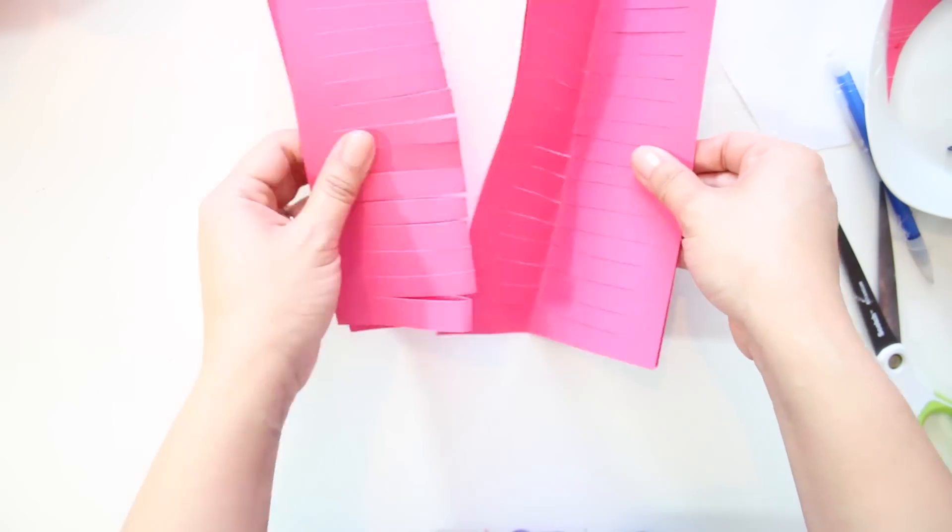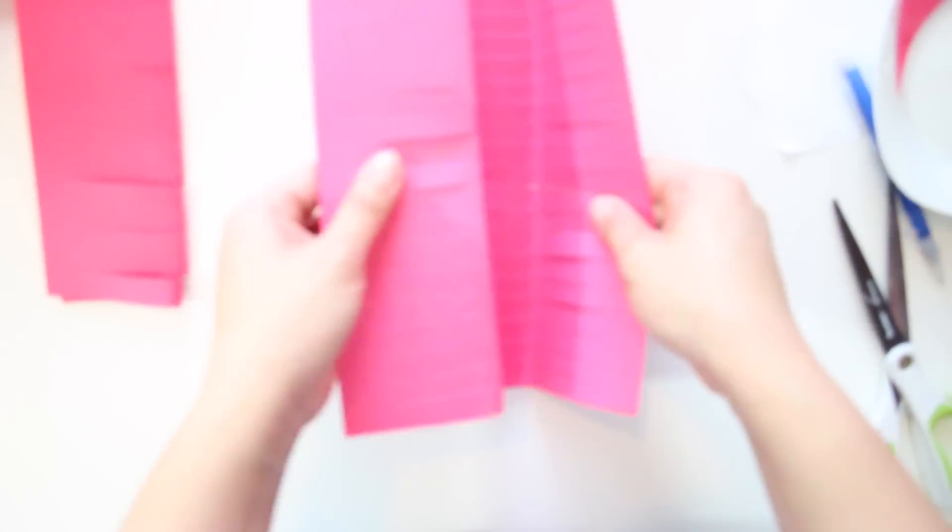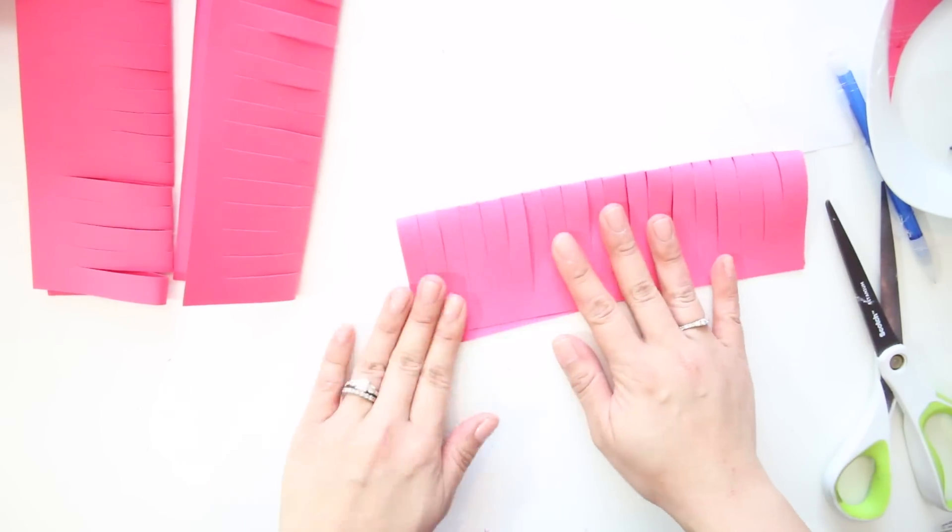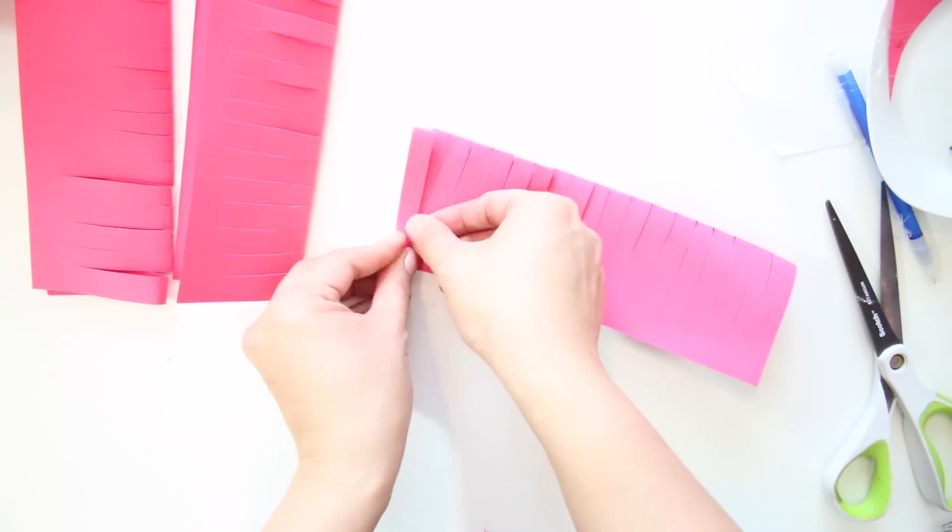Separate the 3 sheets. Then you're going to start rolling the center up. Add a little bit of glue on the way so that it stays in place.